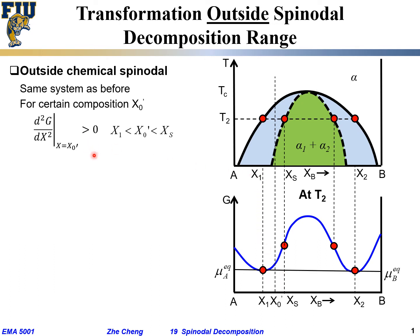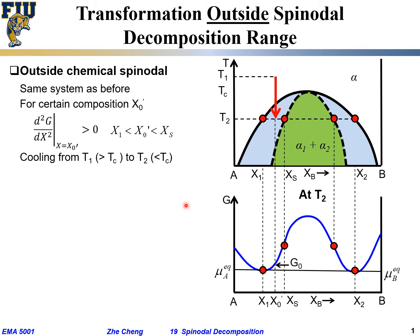We are still doing solid-state phase transformation, going from T1 to T2, where T1 is higher than the critical temperature and T2 is lower than the critical temperature — except now our composition x₀' is outside the chemical spinodal.